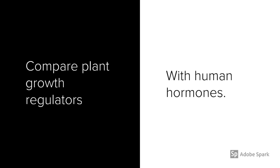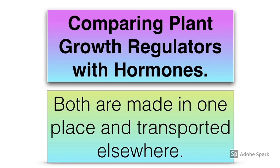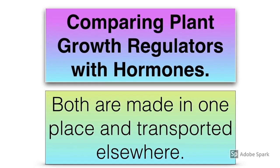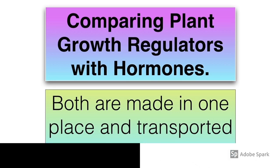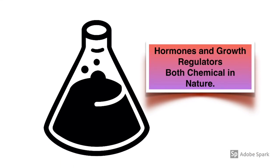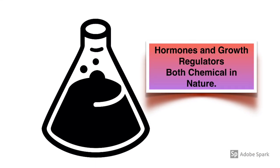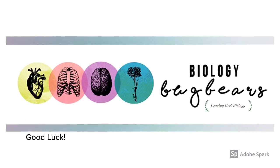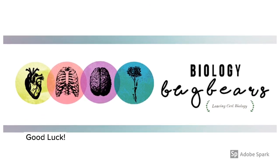You're often asked to compare plant growth regulators with human hormones. One comparison is that both are made in one place and transported elsewhere where they have their effect. Both are slow — they take a long time to reach their intended destination. Plant growth regulators and hormones are both chemical in nature. That was plant responses. The very best of luck with your revision and your exams. Make sure you're doing past papers, checking the marking schemes, and always listen to your teacher.